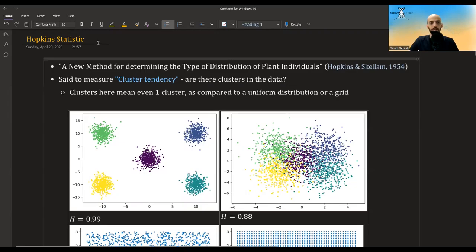Hi guys. In this video, I'm going to talk about the Hopkins statistic. It's from a paper written by Hopkins and Skellam from 1954, and it's said to measure cluster tendency. Are there clusters in the data? But I think this is not exactly what it does. I think it's better understood as comparing the data that you have to both a uniform distribution and a grid of points.